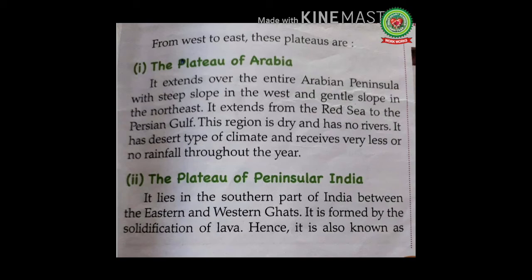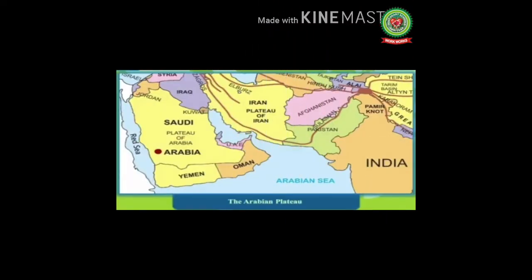Number one is the Plateau of Arabia. It extends over the entire Arabian Peninsula with a steep slope in the west and a gentle slope in the northeast. It extends from the Red Sea to the Persian Gulf. This region is dry, has no rivers, has a desert type of climate, and receives very little or no rainfall throughout the year.